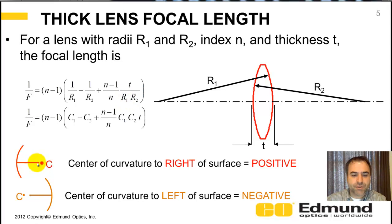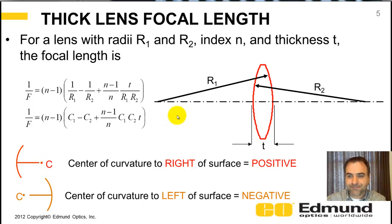If the center of curvature is to the right of the surface, then the curvature is positive. If the center of curvature is to the left, the curvature is negative.